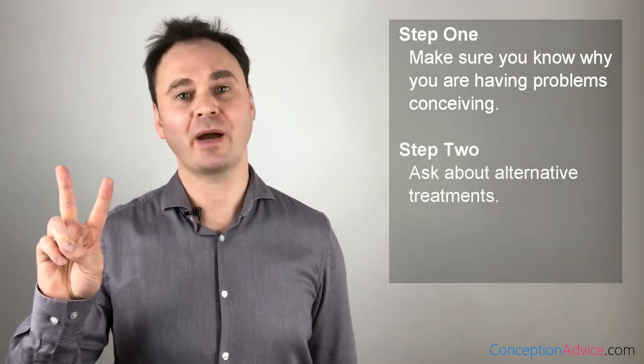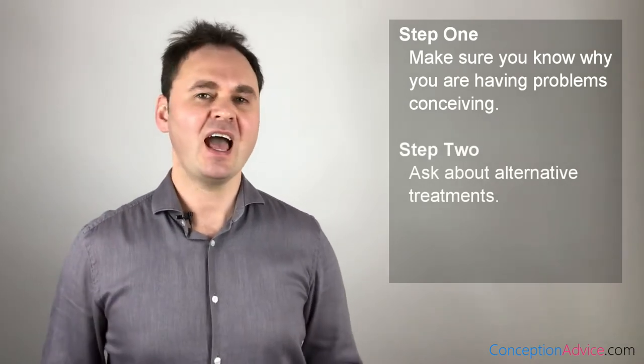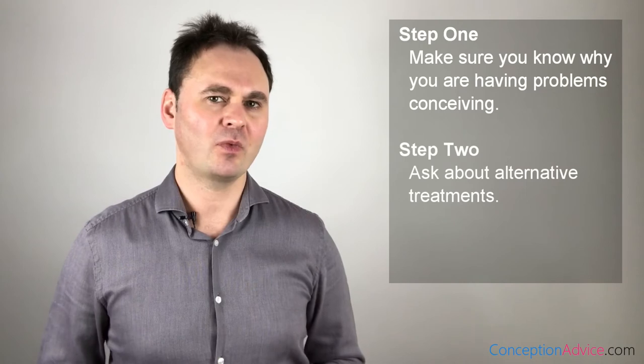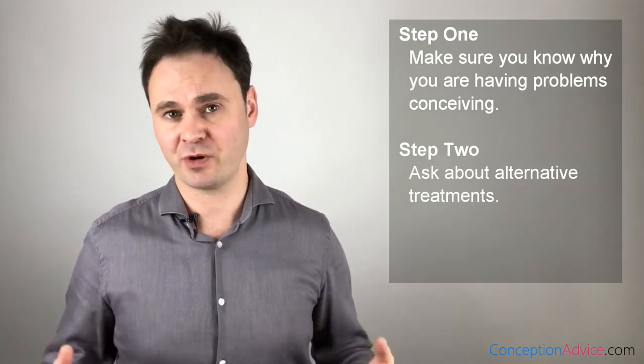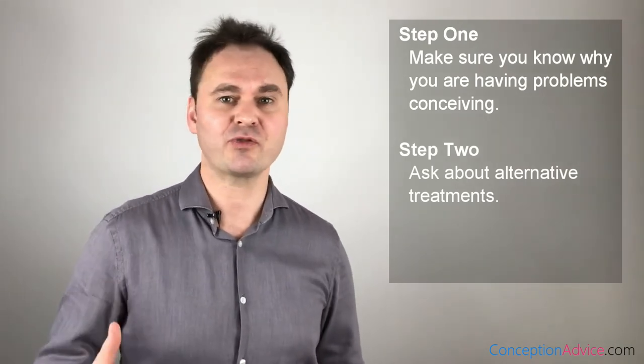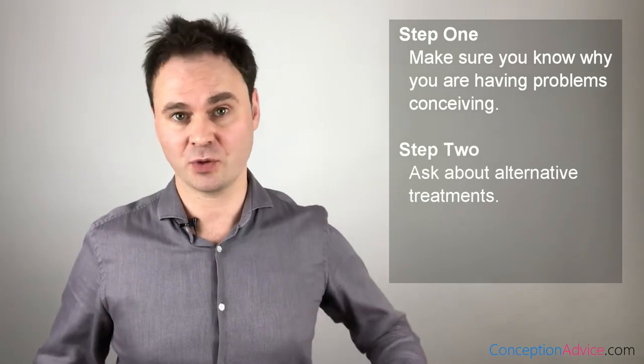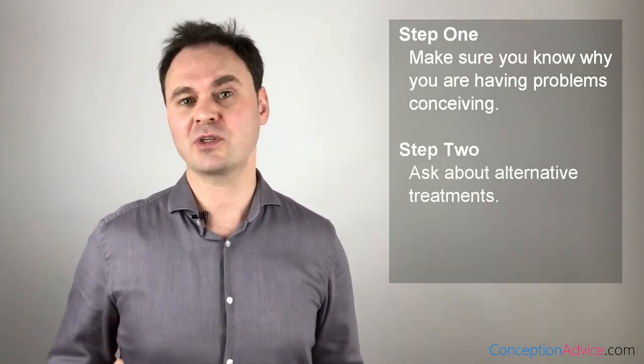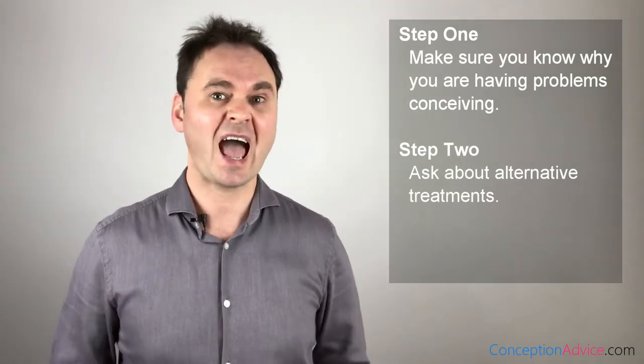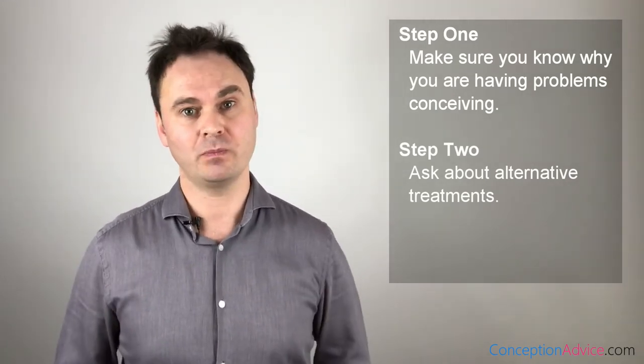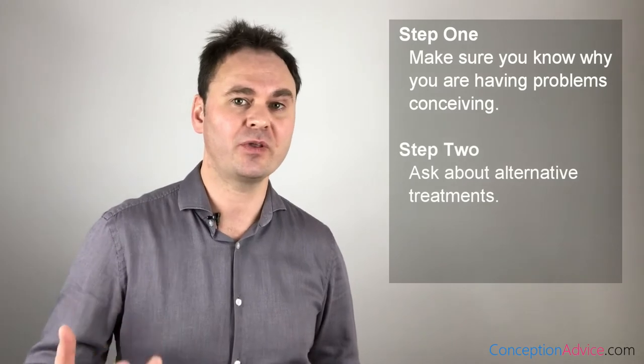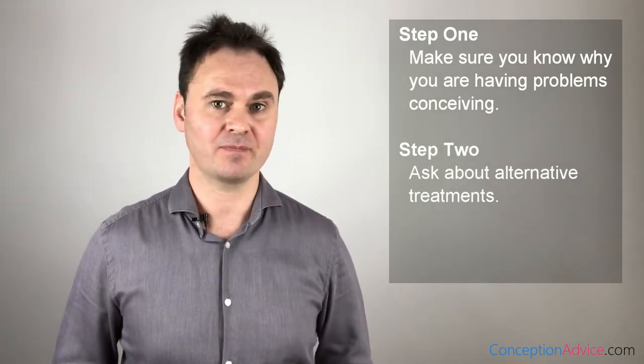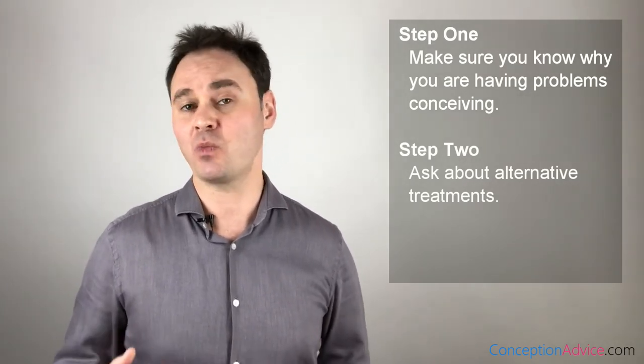Step 2. Ask about alternatives. If a clinic recommends IVF without having talked to you about the alternative treatment types, ask them what other treatments might be appropriate to your situation. If they simply say they won't work, ask them to talk you through the different treatment types and why they won't work for you. That way, you'll know that they have at least considered the alternatives and you'll have reasons why they won't work in your situation.